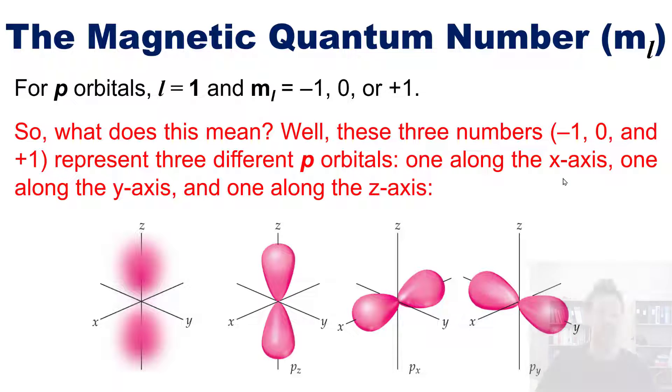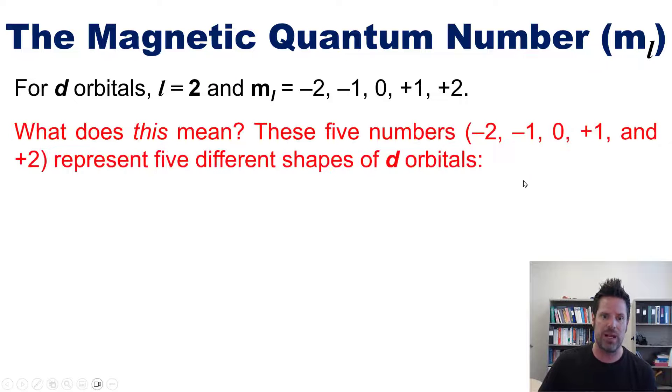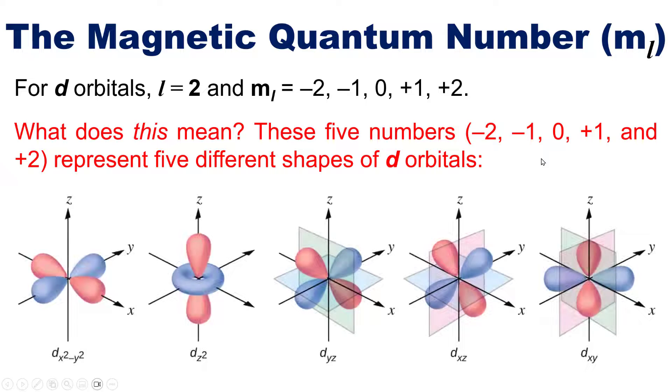Let's go a little bit further. If you've got a D orbital, then your l azimuthal number equals 2, and your m sub l could be any of these numbers. These five m sub l numbers—negative 2, negative 1, 0, plus 1, or plus 2—represent five different shapes of D orbitals.